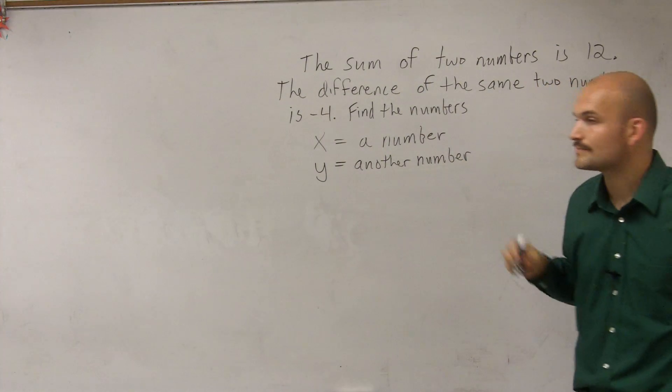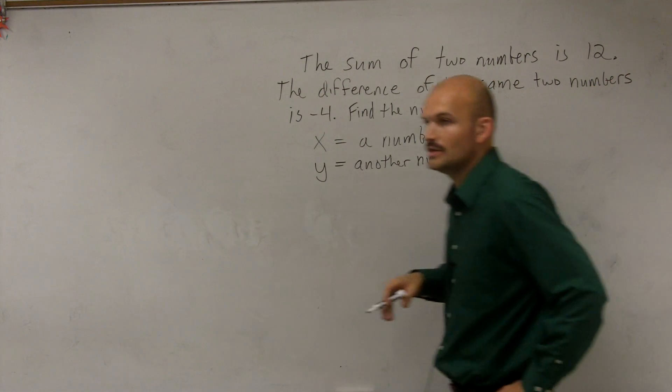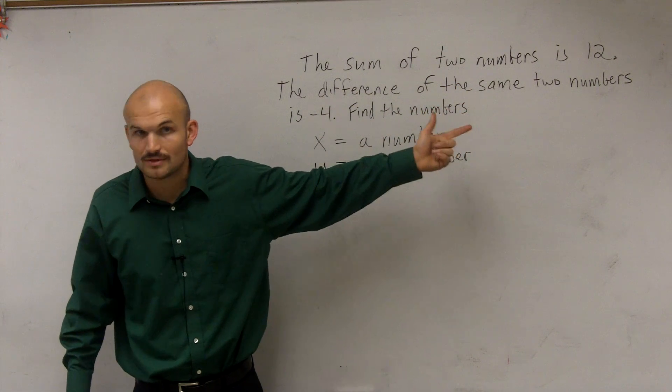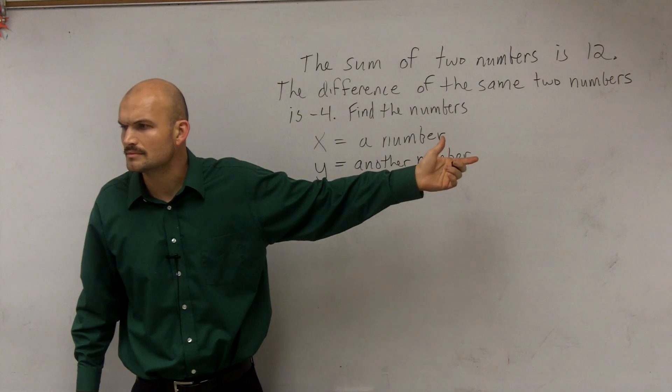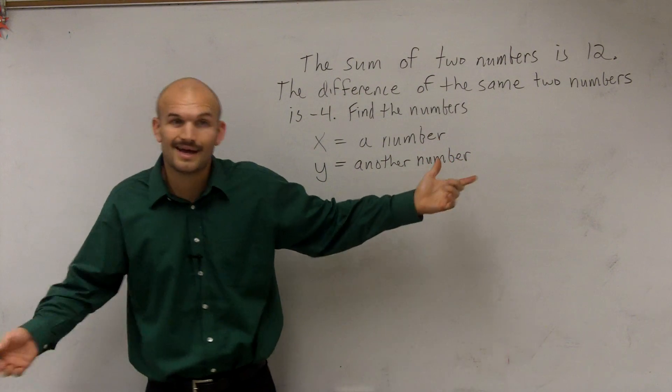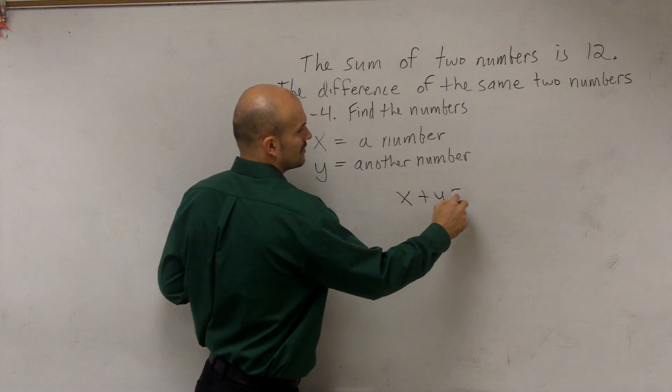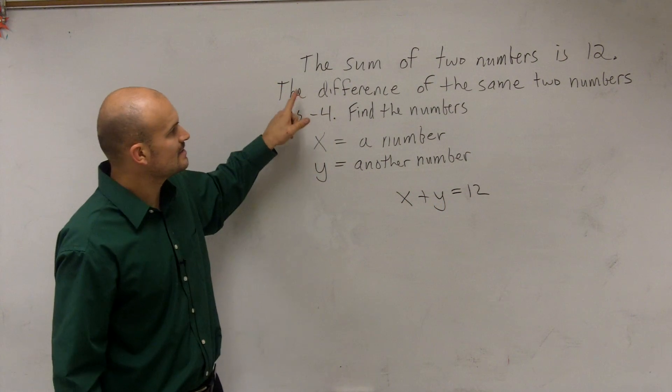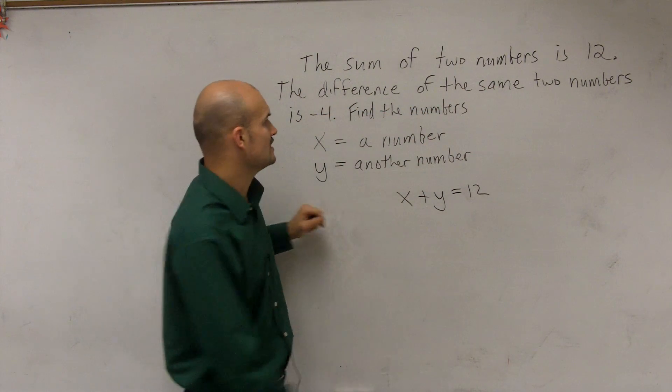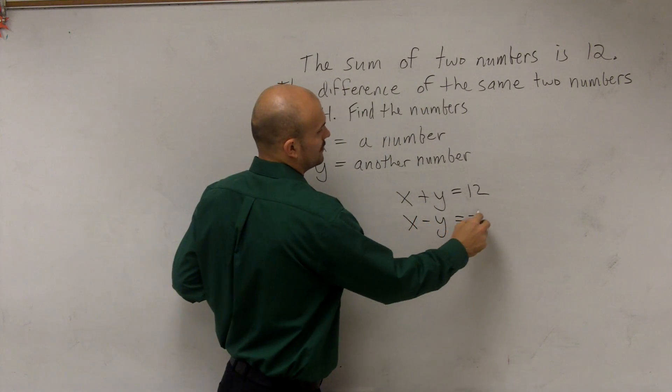So would you set it up like x plus y equals 12, and then another equation saying x minus y equals negative 4? Well, that sounds very good. Let's see if that makes sense. So it says the sum of the two numbers is 12. So sum tells you to add. So you could say x plus y equals 12. Then it says the difference of those same two numbers is also equal to negative 4. So you could say x minus y equals negative 4.